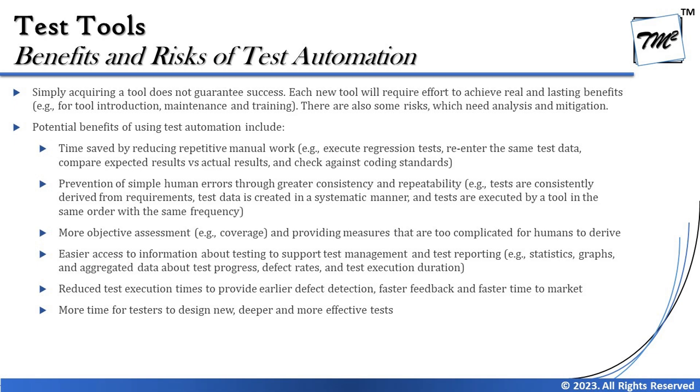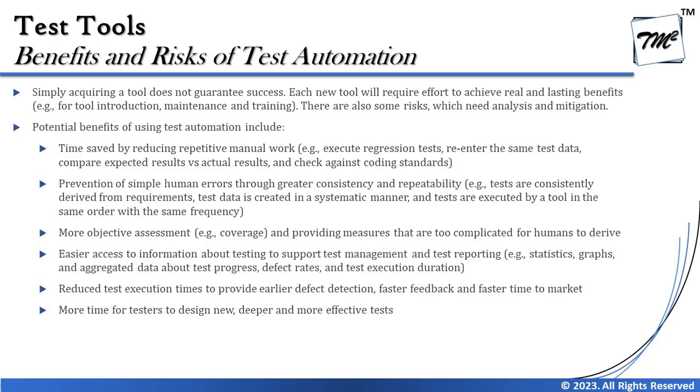Number one: the time saved by reducing repetitive manual work. That's one of the very common benefits of having an automation testing tool. Generally here we're talking about a blend of using tools and automation testing tools. For example, regression testing is something which is a very good candidate for repetition and thus consumes a lot of time, because over a period of time it is expected to grow bigger in size — thus it's a very good candidate for automation as well.